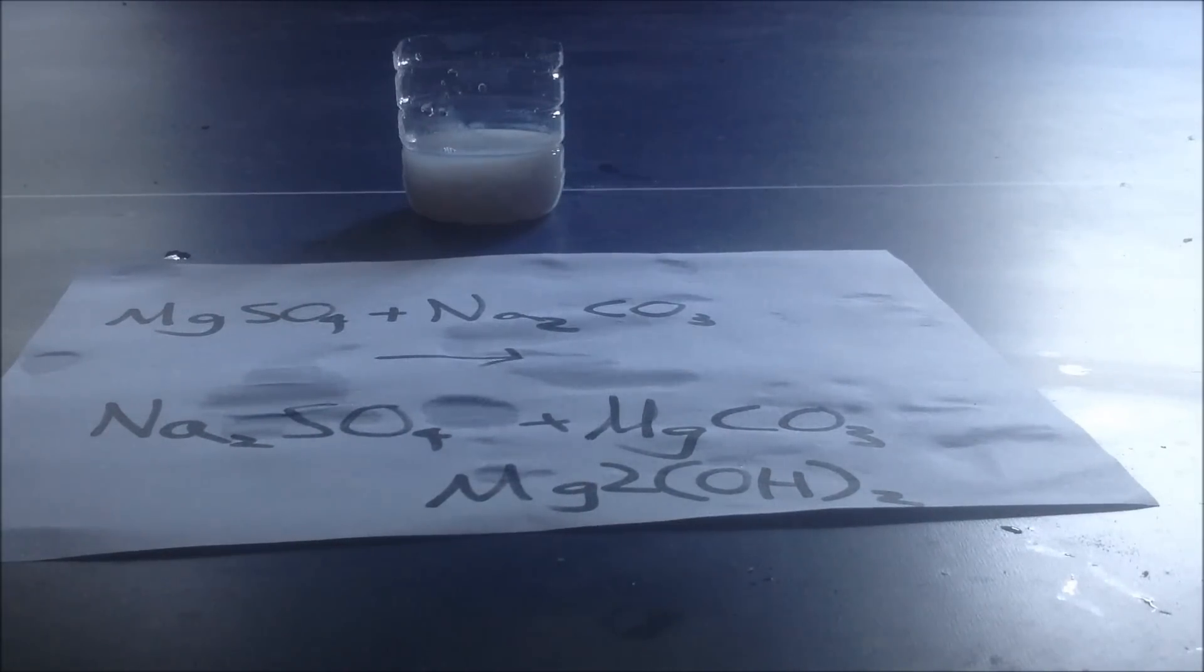Put it on the table and just pour a bit of the solution on. A cream will rest on the top of the paper. You just scrape that off. That's your magnesium carbonate and magnesium hydroxide.